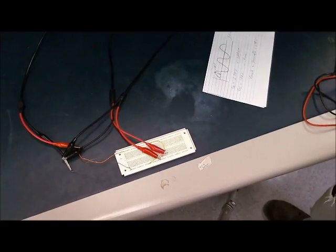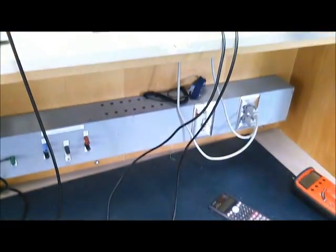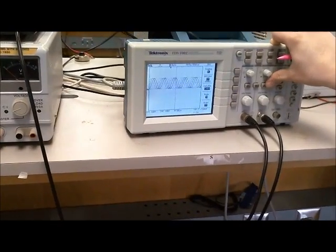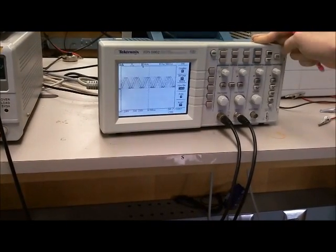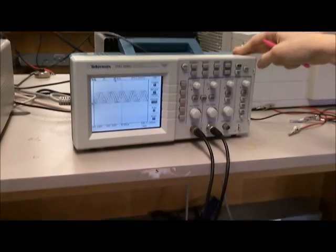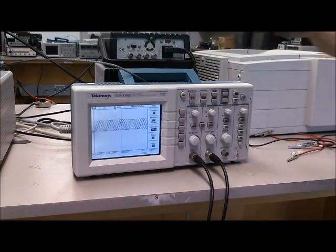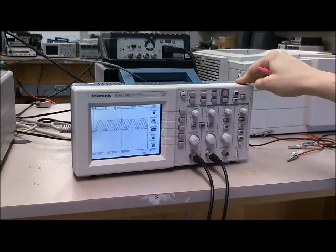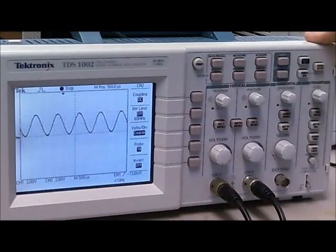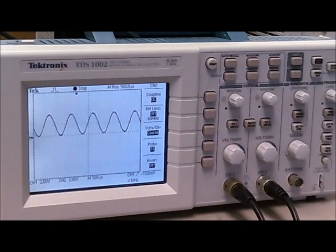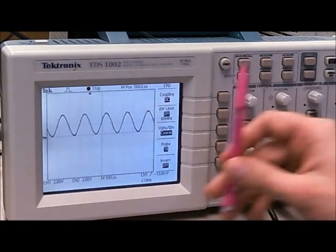Here it is. We do the math function of channel 1 minus channel 2, which gives me the voltage drop across the resistor, which generates the following wave. I'm going to stop it so we can easily see it.